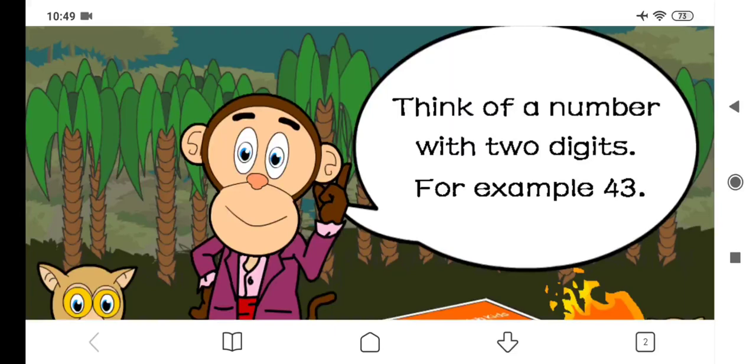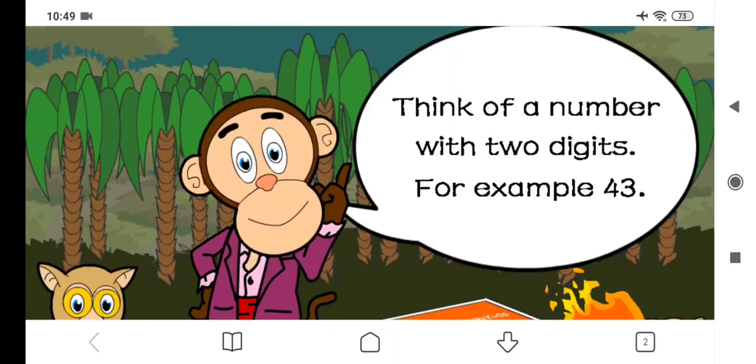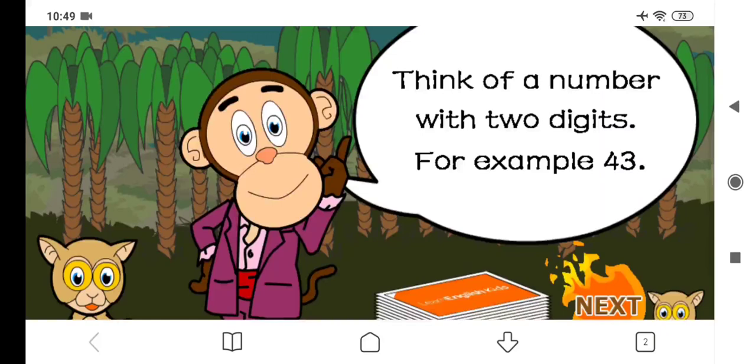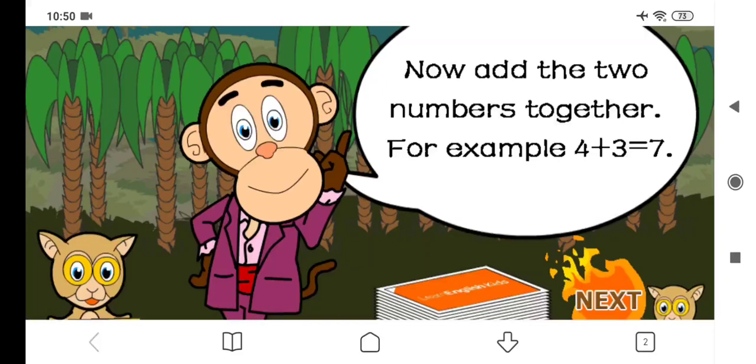First students, we must think of a number with two digits. For example, forty-three or maybe twenty-five or ninety-two. I'll take fifteen. Now we must add the two numbers together. For example, if our number is forty-three, we write four plus three and get seven. My number was fifteen, so I write one plus five and get six.